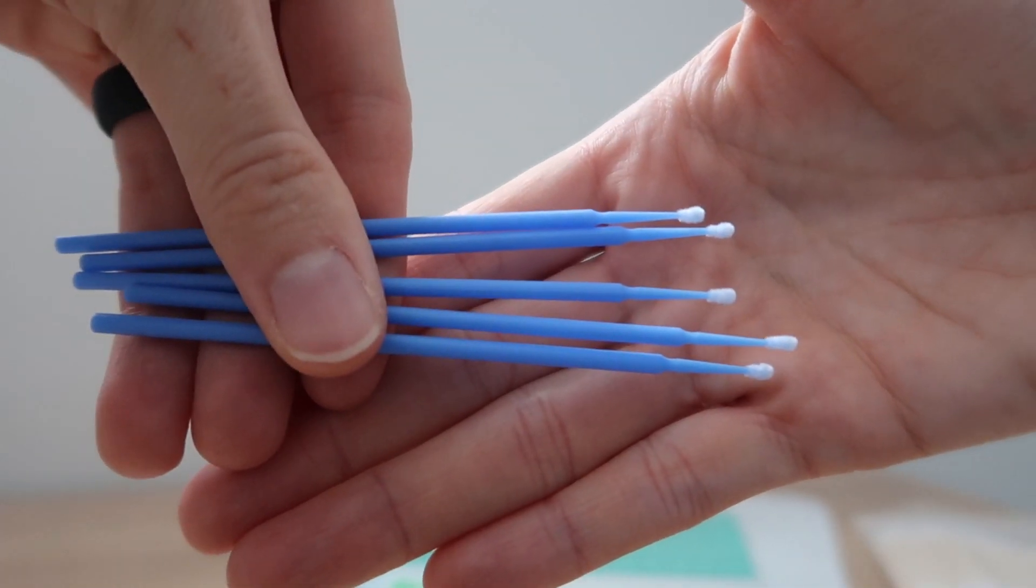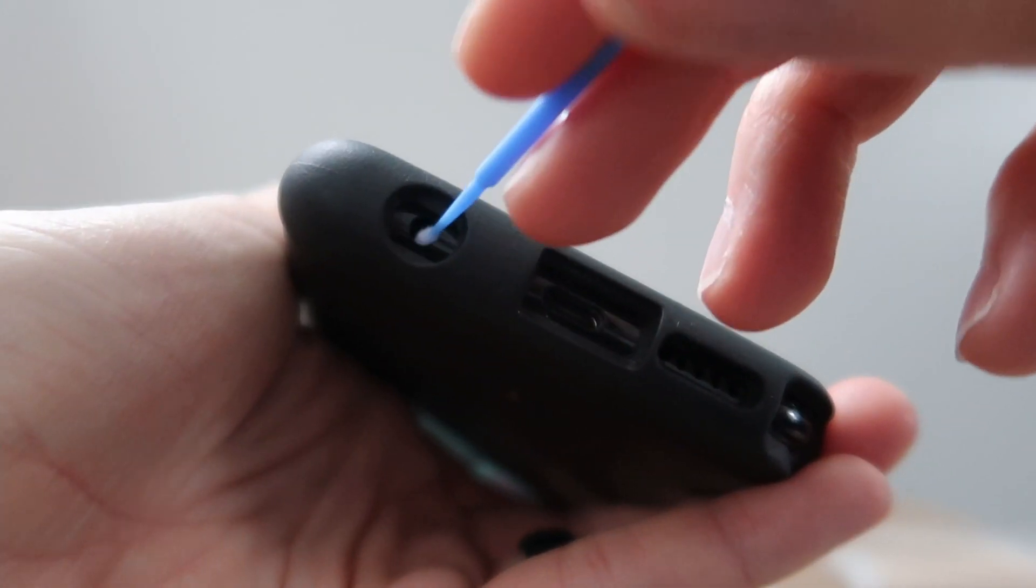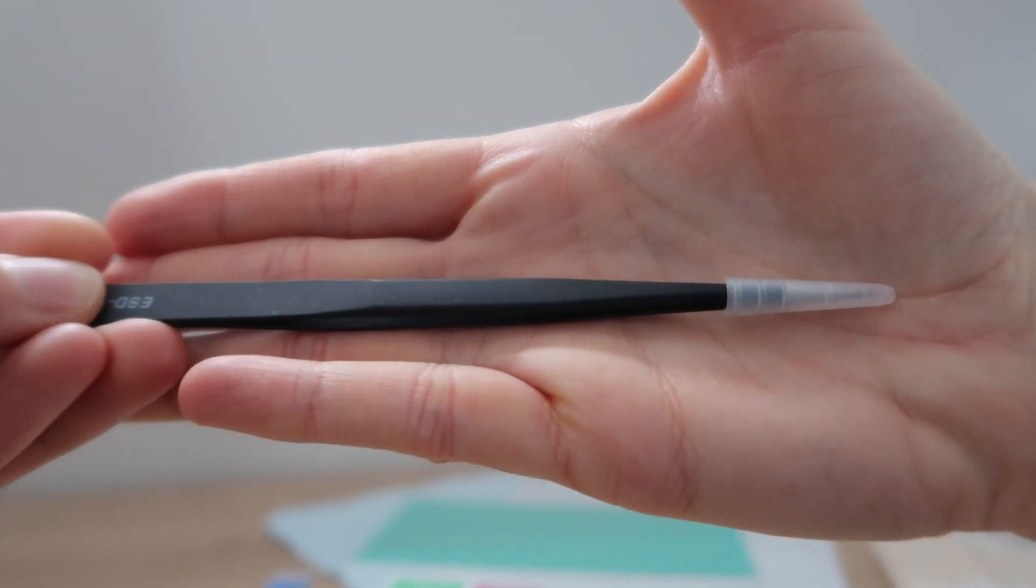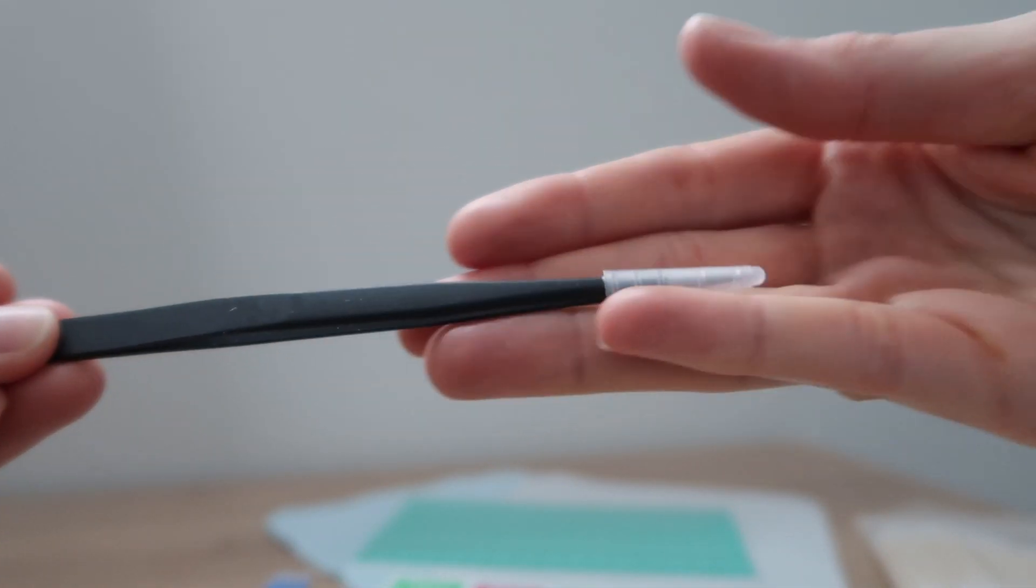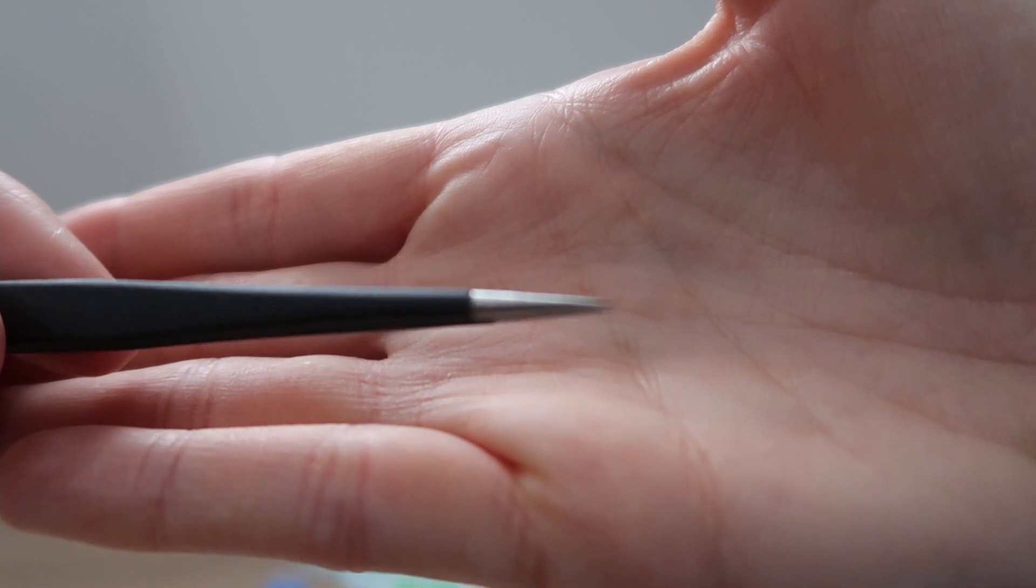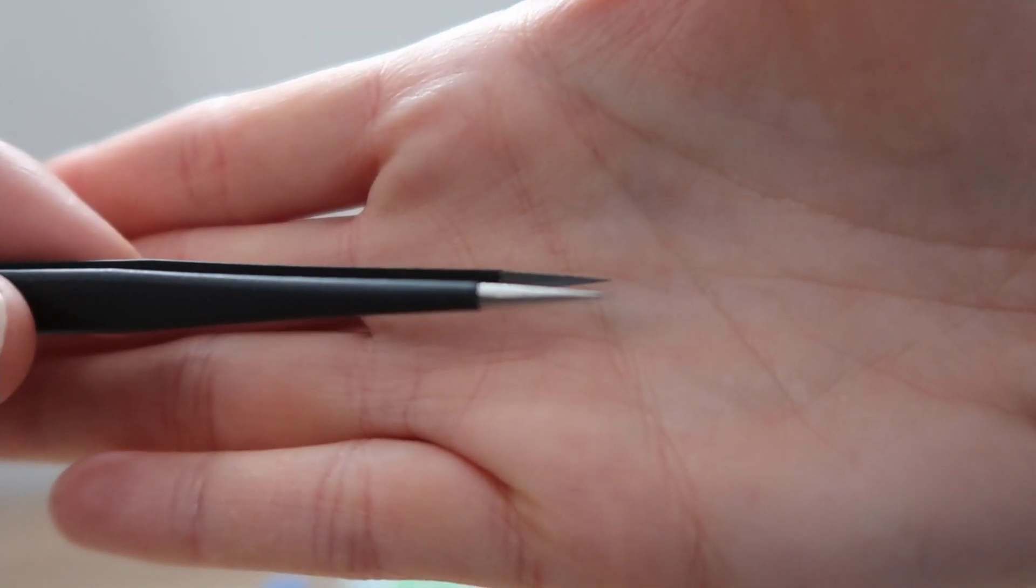Five sponge swabs. It can really get into your ports. Pointed steel tweezers, which come with a safety cap. Those are really going to be handy, not just for cleaning your phone and AirPods.